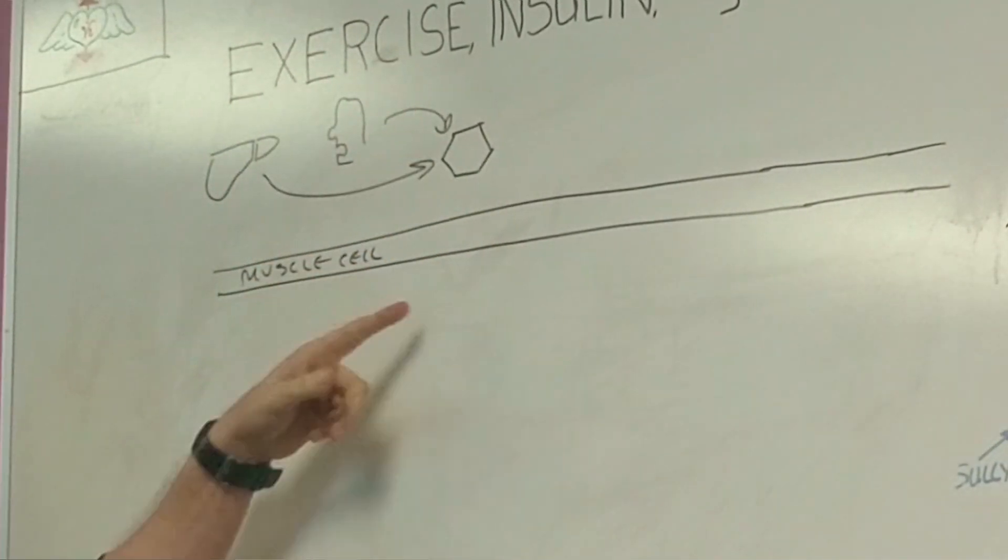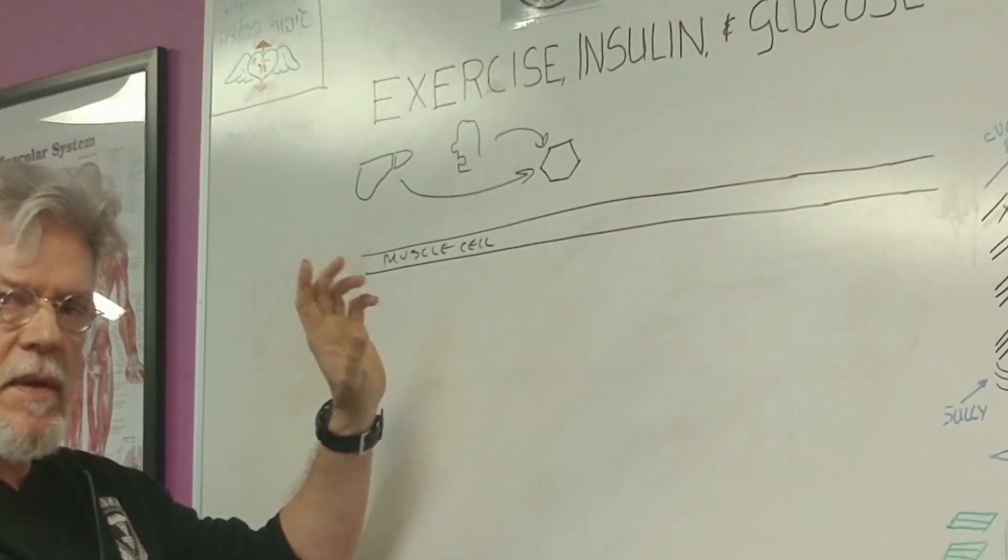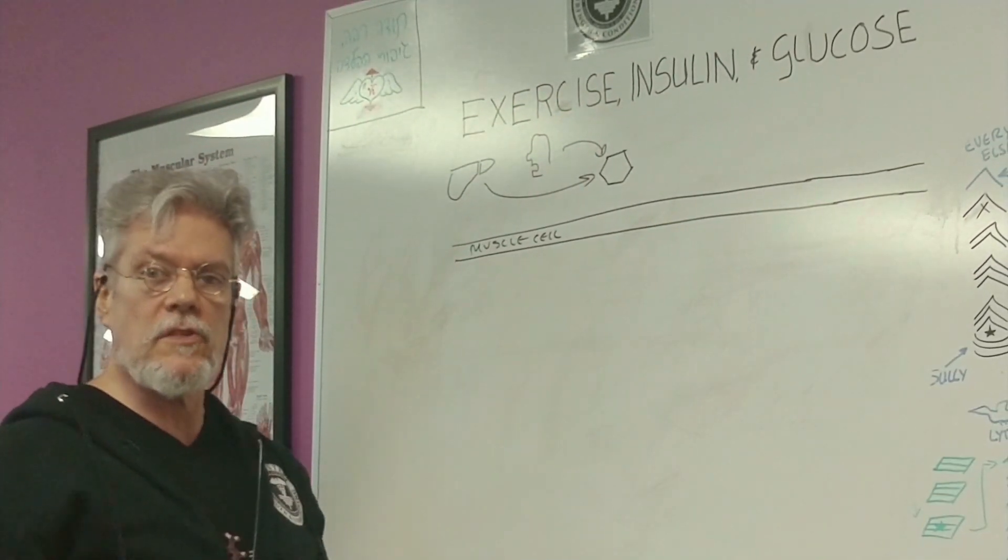But the glucose will not just diffuse into the muscle cell. It has to have a special signal and a special pathway to get into the muscle cell.